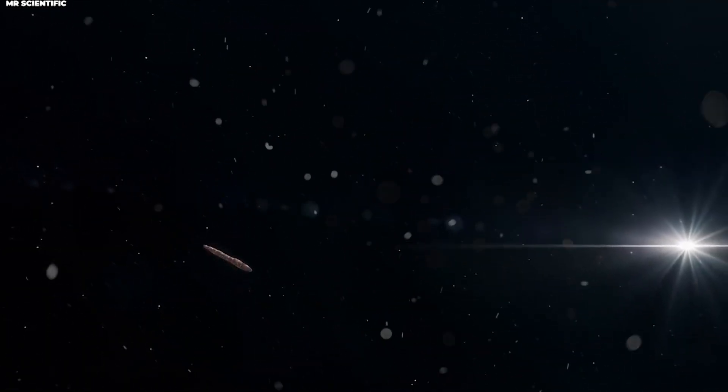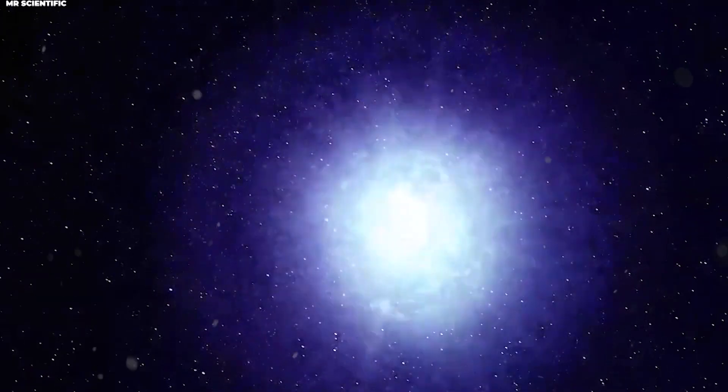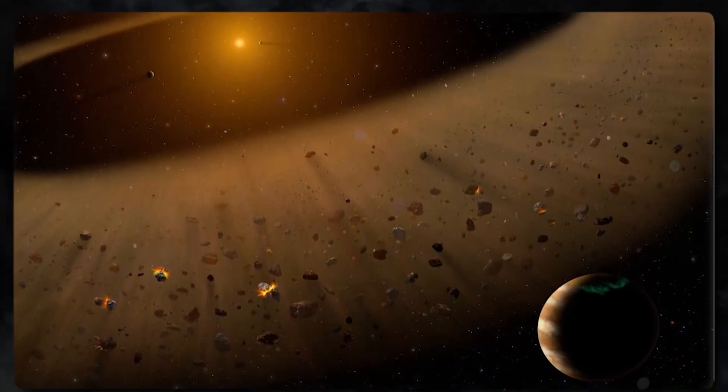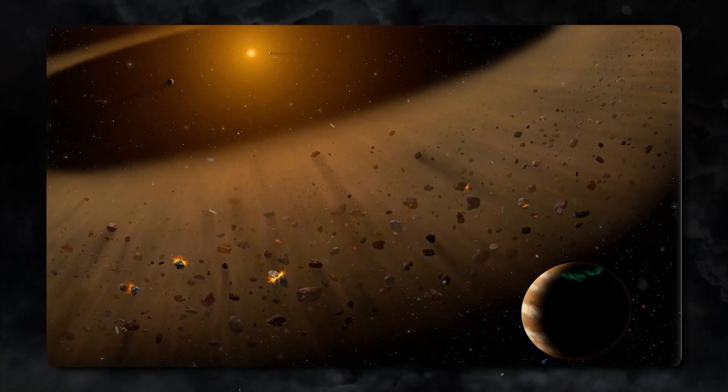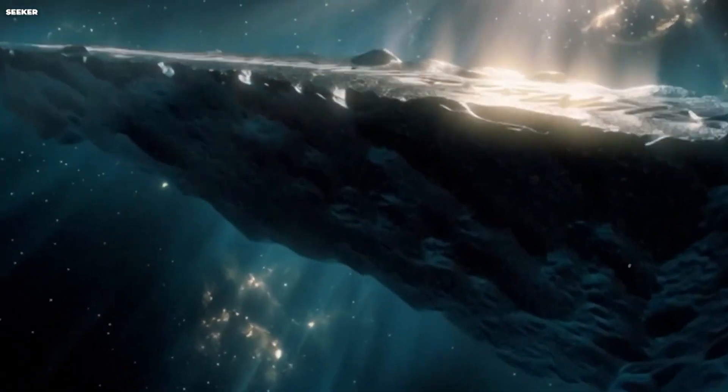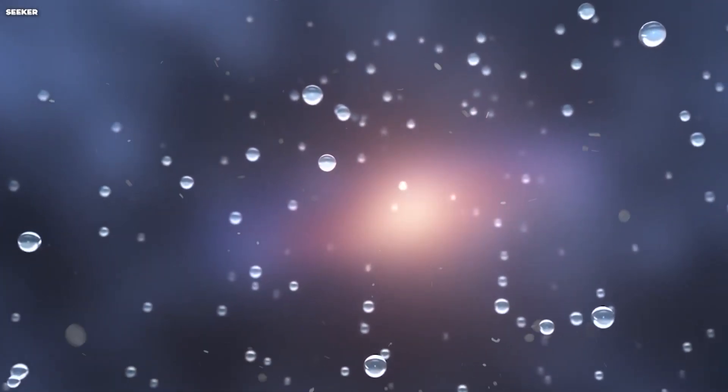What does this mean? It suggests that Borisov formed in an extremely cold region of its home star system, probably much farther from its parent star than even our Kuiper belt objects are from the sun. This comet came from a deep freeze environment we can barely imagine.